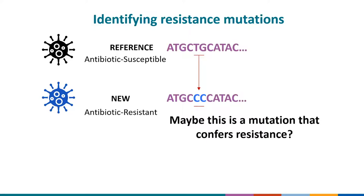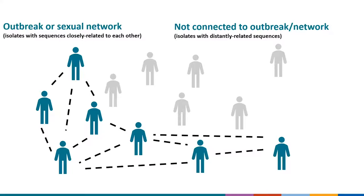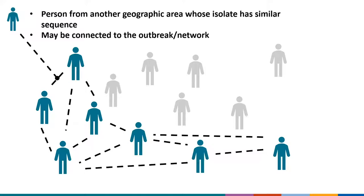A third use of genomic data is defining an outbreak or sexual network. By identifying closely related isolates through sequencing and incorporating epidemiological data, we may be able to define an outbreak among people from whom isolates were collected. If interested in sexual networks, you can use genomics to identify the contours of a network. Genomic data also allow you to see if a sequence from a different area — such as a different country — is closely related to the outbreak, and thus may be connected, expanding your understanding of where it started, where it's going, and its extent.